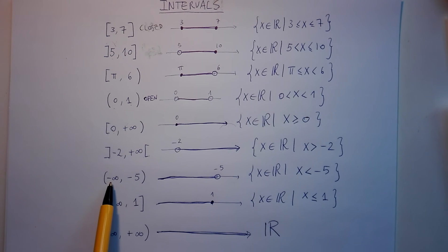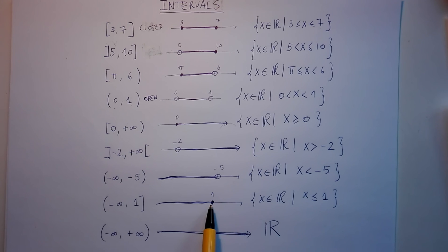We can have also from minus infinity up to a number. We can either exclude this number using a normal parenthesis or a square bracket pointing outwards. It's all the numbers up to minus five, excluding minus five, so all the real numbers less than minus five. Or we can include the number here. For example, from minus infinity up to one, including one, which are the real numbers smaller or equal to one.